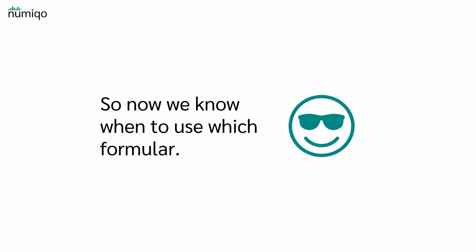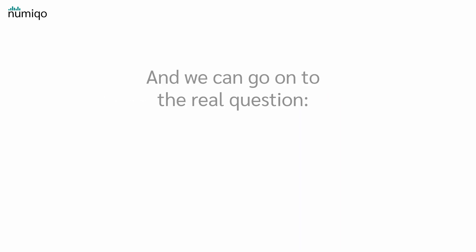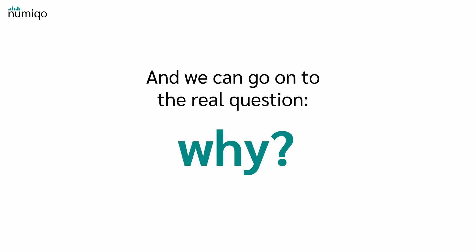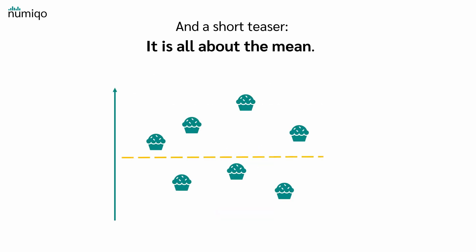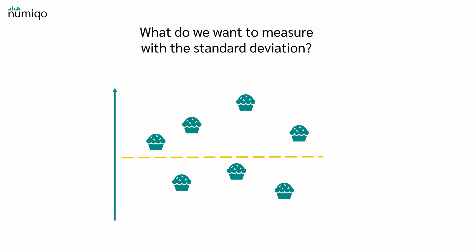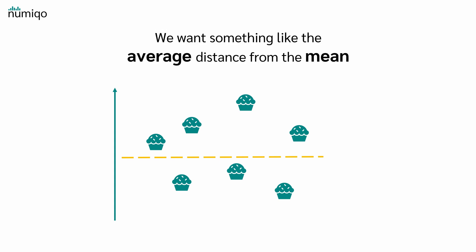So now we know when to use which formula, and we can move on to the real interesting question: why? Why do we actually need two different formulas? The short teaser: it's all about the mean. What do we want to measure with the standard deviation? We want to measure how much the data varies around the mean — something like the average distance from the mean.